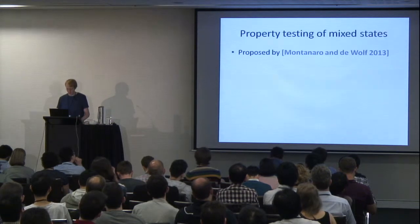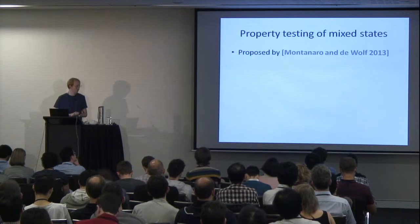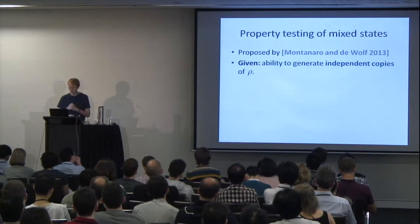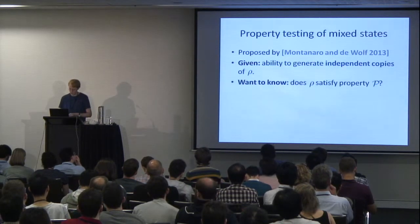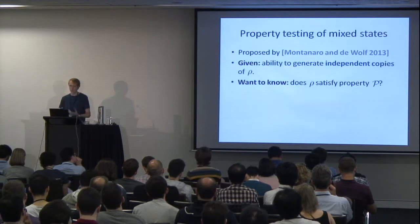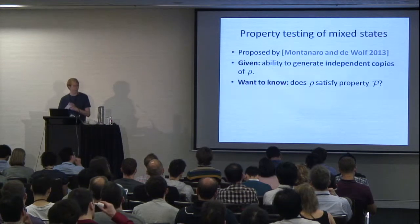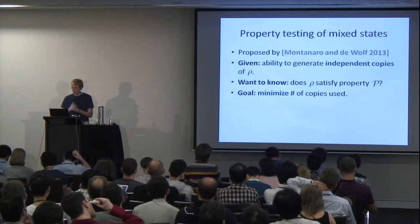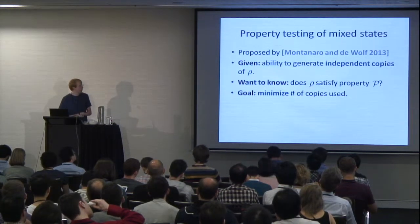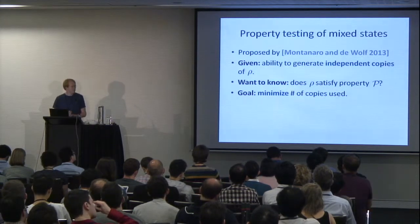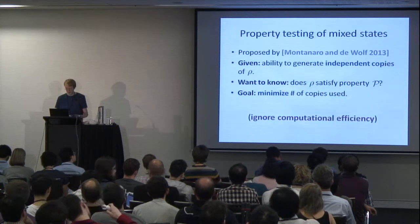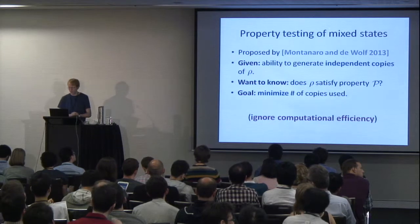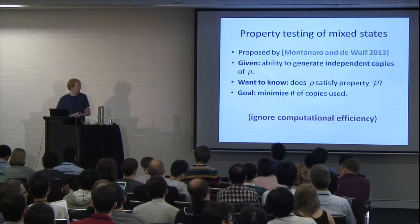What is property testing of mixed states? It was a model proposed in a property testing survey by Montanaro and DeWolf. What you're given is the ability to generate independent copies of your mixed state rho — you can generate as many as you want, just at the press of that button. You want to know: does your rho satisfy some property P, or is it far from satisfying property P? Every time you run your apparatus it's a very expensive operation, so we'd like to minimize the number of copies used. We only care about the copy complexity, though the algorithms in our paper all happen to be computationally efficient.